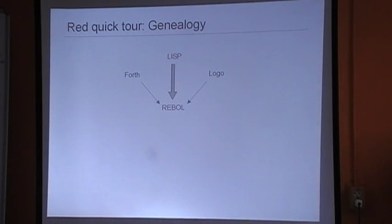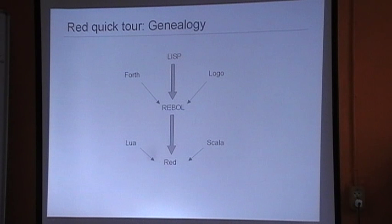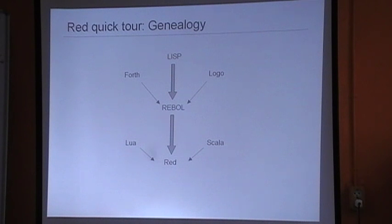The genealogy is also pretty well known now. Red is mainly a derivative of Rebol, which itself is a derivative of Lisp with a few more influences from other mainstream languages.